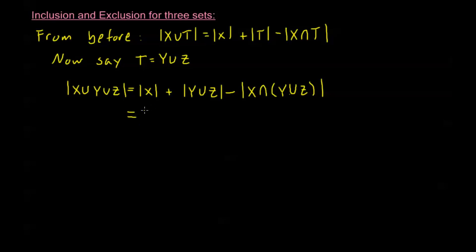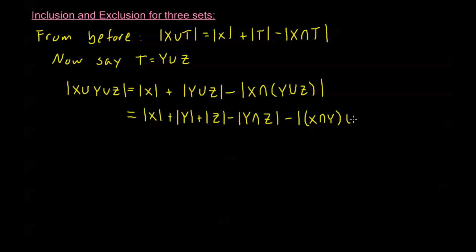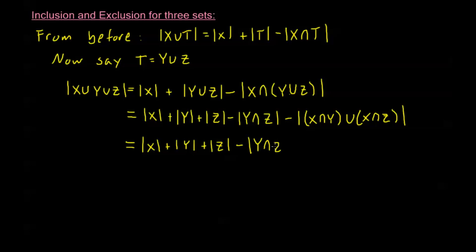Now we want to simplify this. The order of X stays as is. For the order of Y union Z, we can use our first formula again: the order of Y union Z equals the order of Y plus the order of Z minus the order of Y intersection Z. Then we can distribute using the distributive law for set operations: X intersection (Y union Z) equals (X intersection Y) union (X intersection Z).